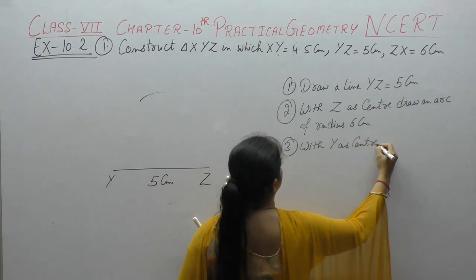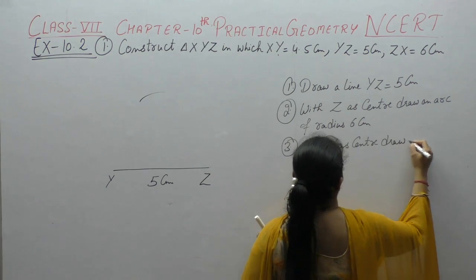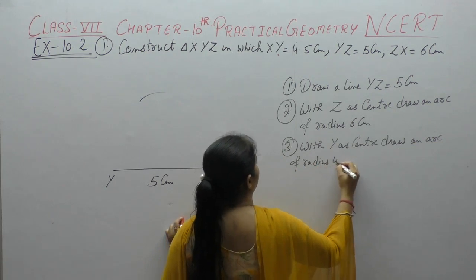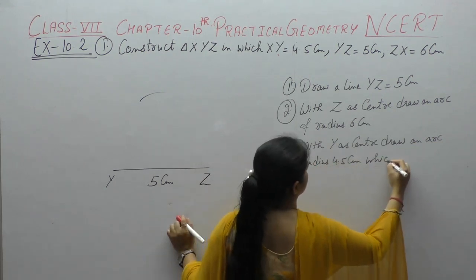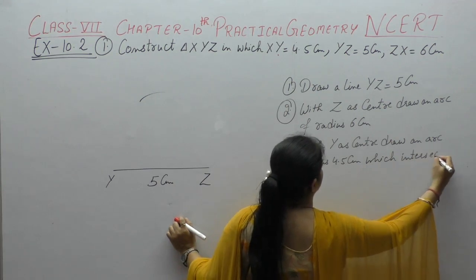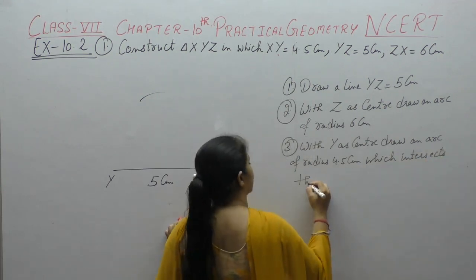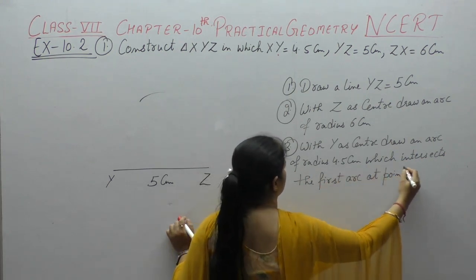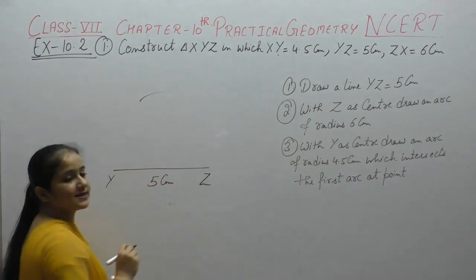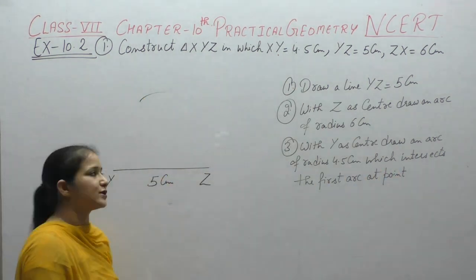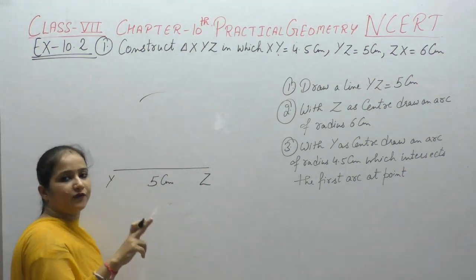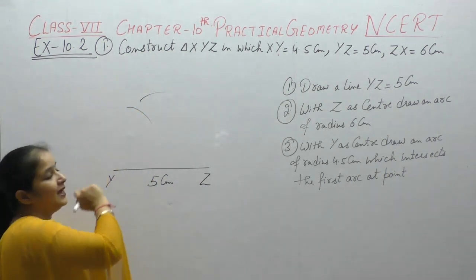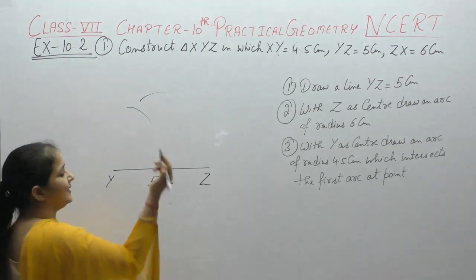Now with Y as center, draw an arc of radius 4.5 cm. This arc will intersect the first arc at a point. Z से 6 cm की arc लगाई, compass open करके Y से 4.5 cm compass open कीजिए, Y से arc लगाई 4.5 cm की। अगर यह दोनों arcs intersect नहीं कर रही तो...